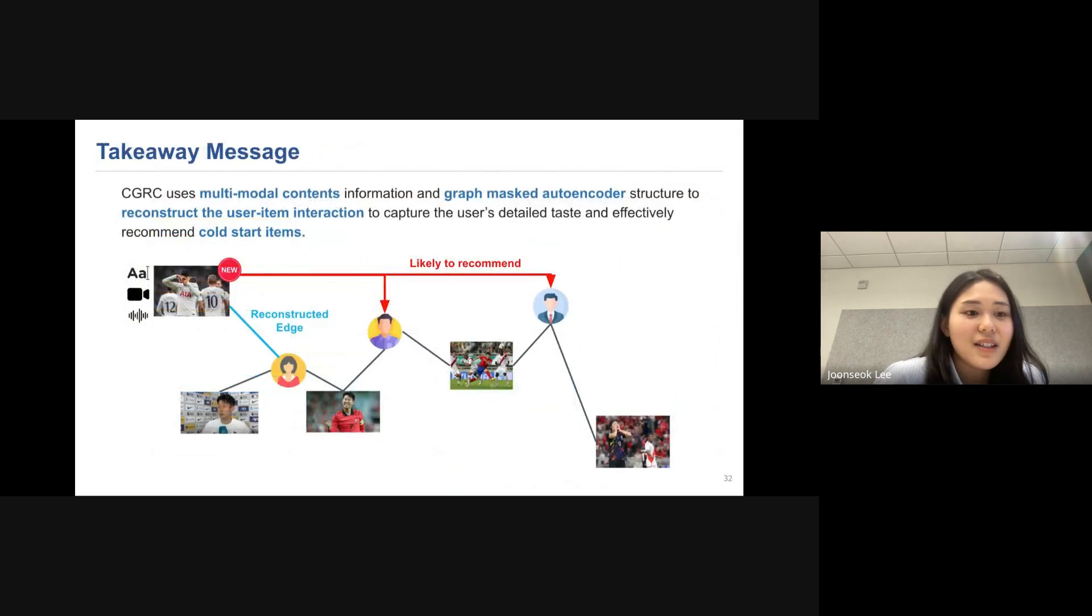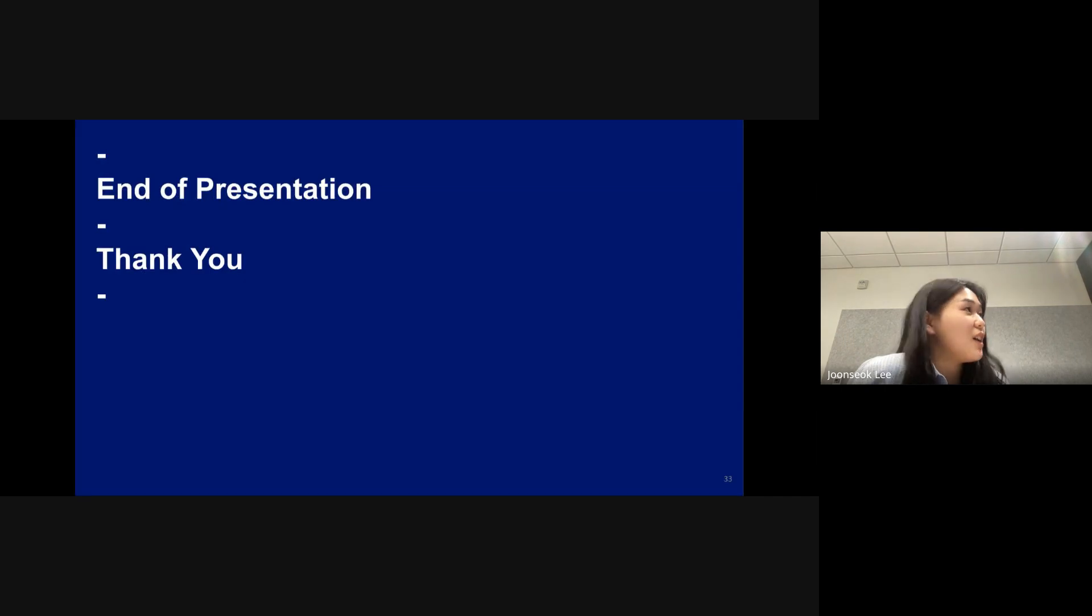And this last page is our takeaway message of the presentation. So our model, CGRC, uses multimodal content information and graph mask autoencoder structure to reconstruct the user-item interactions to capture the user detail taste. And it effectively recommends cold start items. This is the end of the presentation. Thank you for listening.